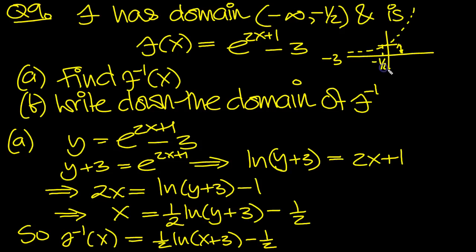So that's minus 1 half there. So when you put minus 1 half in here, you get e to the 0. Minus 1 half is minus 1, plus 1 is 0, e to the 0 is 1, minus 3 is minus 2.